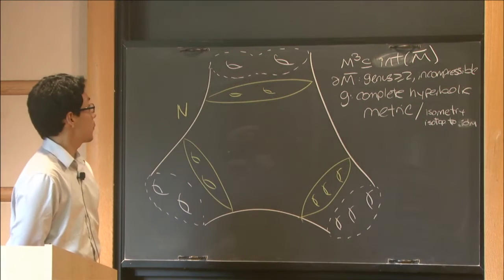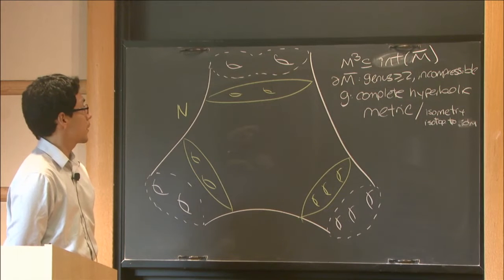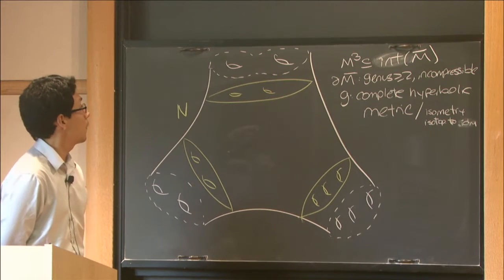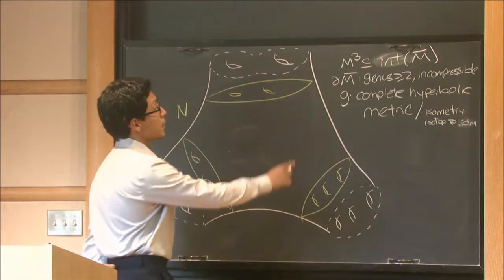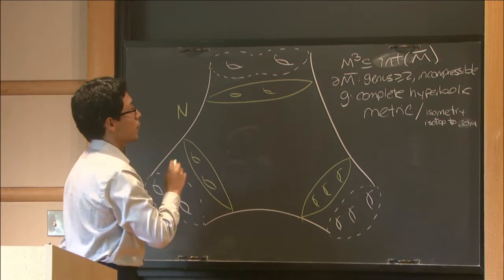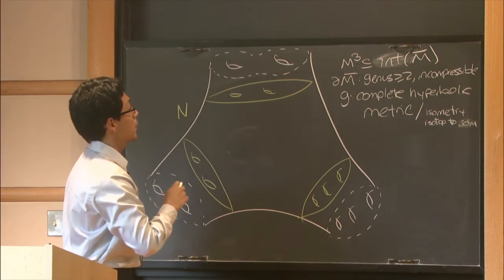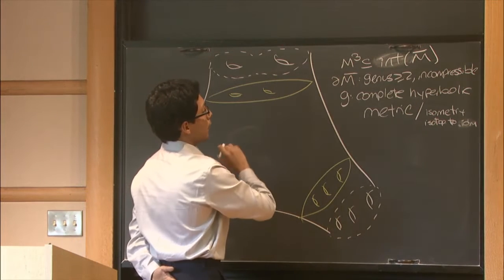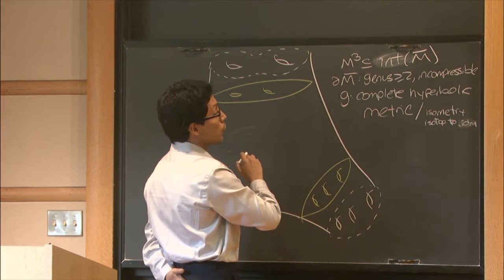Let me first start by telling you which are the type of objects and structure I will be caring about. I will be interested in the interior of some compact 3-manifold with boundary. I will consider, for technical reasons to keep it simple, that all my boundary components have genus greater or equal than 2,